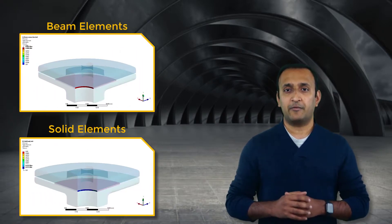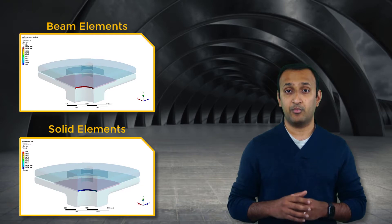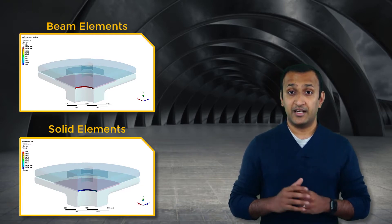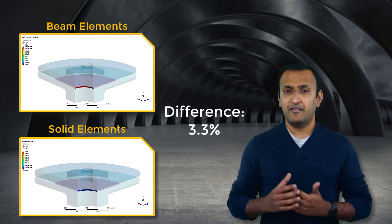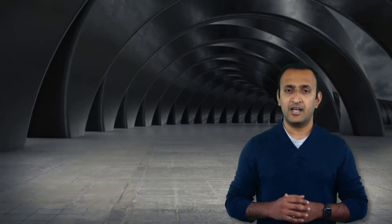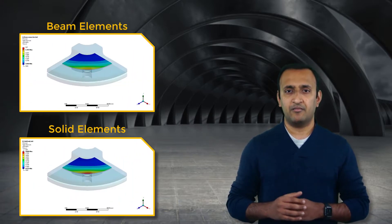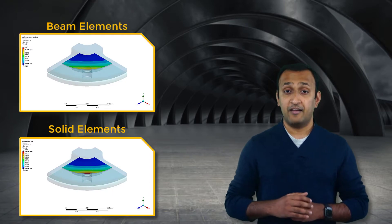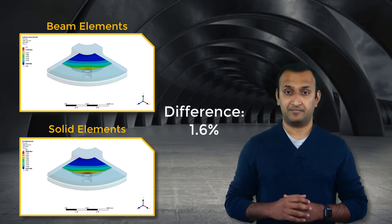Here are the results for contact pressure measured at the inner surface of the seal for both cases. We notice a difference of 3.3 percent in the results, which shows that the contact pressure is reasonably accurate using both methods. We observe a similar behavior with contact pressure over the full seal surface, which further ascertains our earlier observation. So, if the objective of our study is to assess the performance of the seal, then using beam connections to represent the bolt is the recommended way.